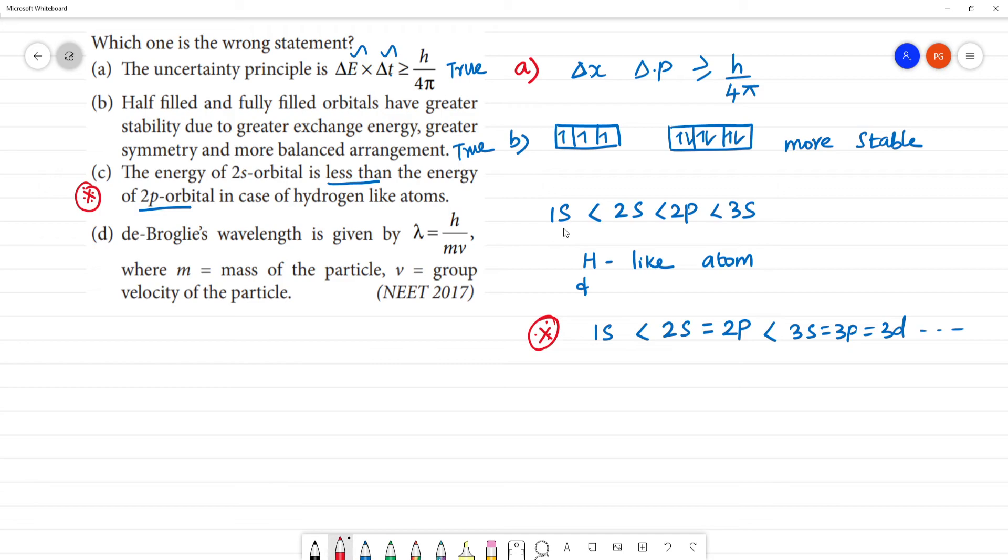So, for hydrogen-like atoms, 2s is not less than 2p. It is correct statement, but 2s equal to 2p - this is the wrong statement. And we know that the de Broglie wavelength is lambda equal to h by mv, and this is true statement. So which is the wrong statement? We know that C one is the answer. Clear?